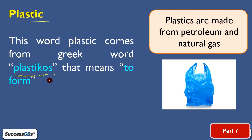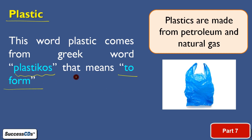Where did the name plastic originate? It originated from a Greek word — Plasticos. Its meaning is 'to form.' So the material that can be formed is named plastic — this is what we actually mean by saying plastic.